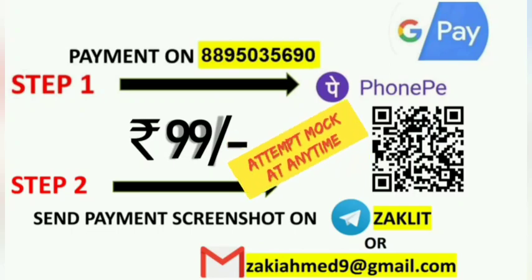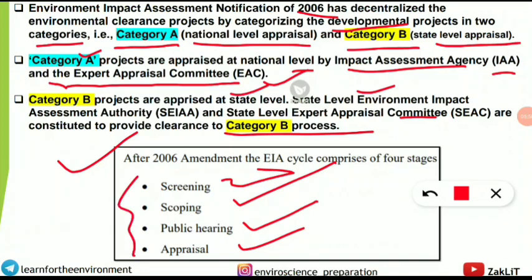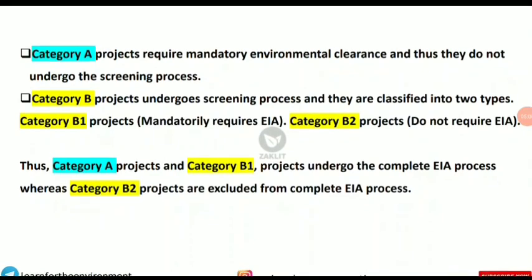Under the 2006 amendment, the EIA cycle comprises four stages: first, screening; second, scoping; third, public hearing; and fourth, appraisal. At the appraisal stage, Category A projects are handled at the national level and Category B projects at the state level. Remember the sequence of these four stages.